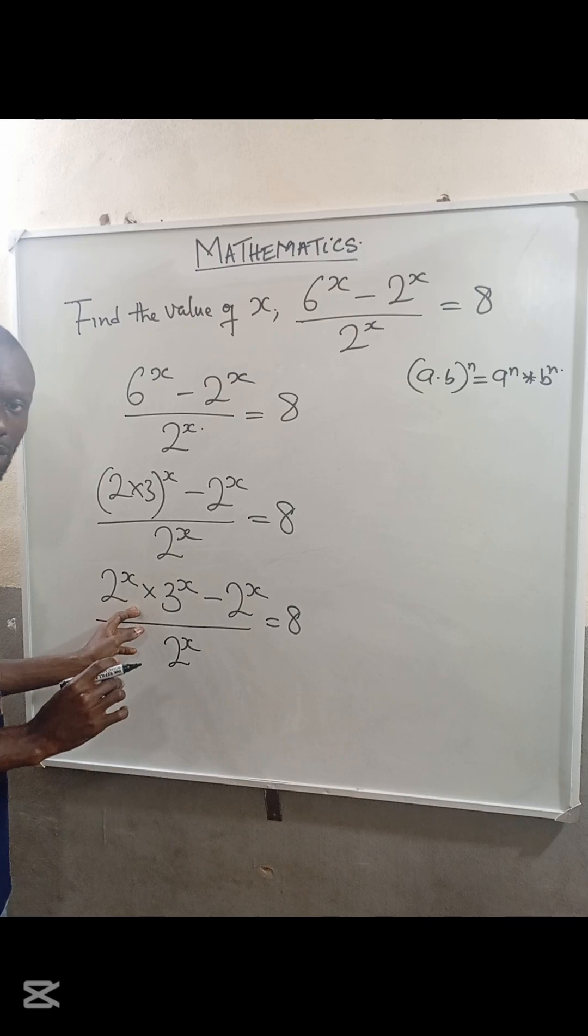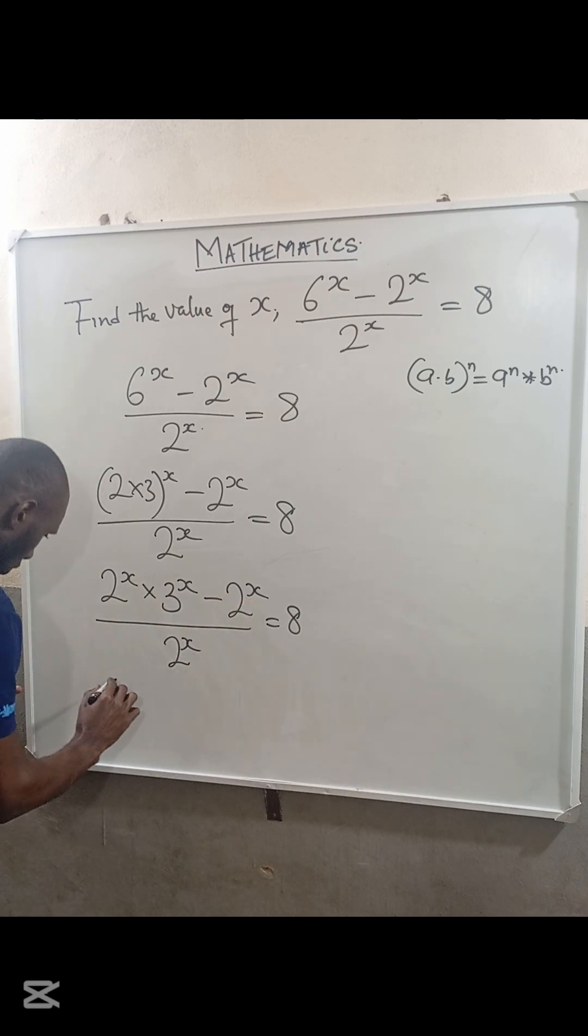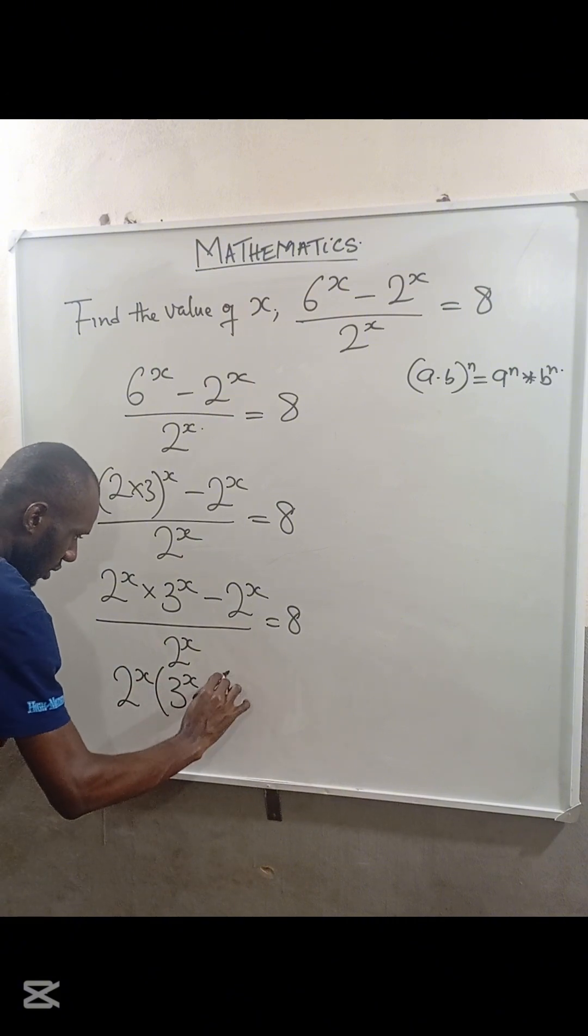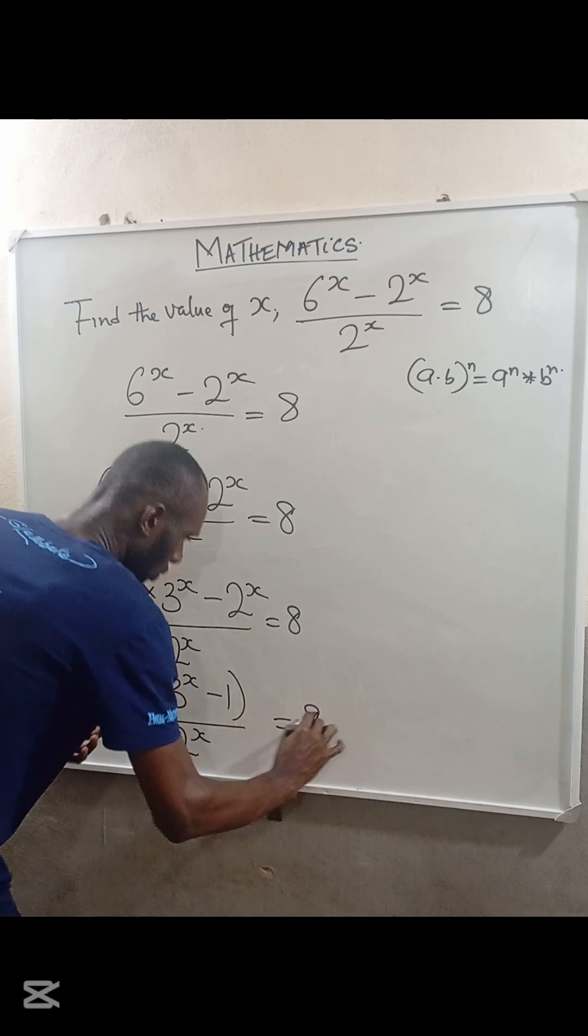Now, to clear the numerator, we can factorize 2^x. So the equation becomes 2^x(3^x - 1) / 2^x = 8.